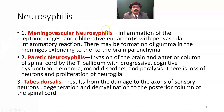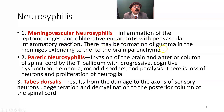We will go to neurosyphilis. We have three types: meningovascular neurosyphilis, paretic neurosyphilis, and tabes dorsalis. They may be mingled together — it may not be purely tabes dorsalis, but maybe tabes dorsalis with paretic neurosyphilis, which we call tabes paresis. Meningovascular neurosyphilis involves inflammation of the leptomeninges — that means the pia mater and the arachnoid — and obliterative endarteritis with perivascular inflammatory reaction. There may be formation of gumma — a swelling or non-healing ulcer — in the meninges extending to the brain parenchyma.